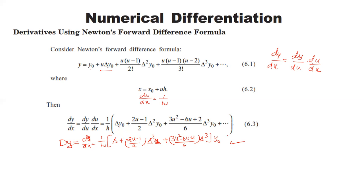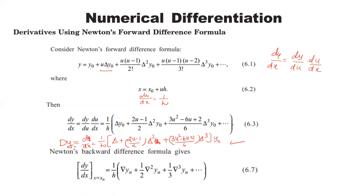For the Newton backward difference formula, y_n = y_n + u·Δy_n + u(u+1)/2! · Δ²y_n. With x = x_n + uh, the backward difference formula gives dy/dx = (1/h)[Δy_n + (1/2)·Δ²y_n + (1/3)·Δ³y_n]. This is the differential formula using the Newton backward difference formula.